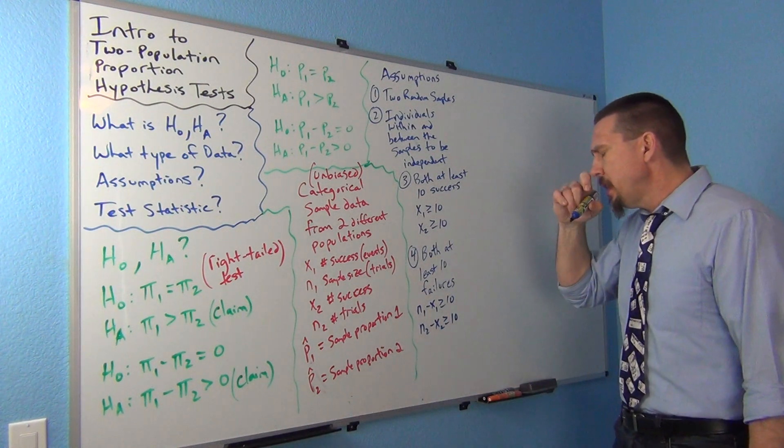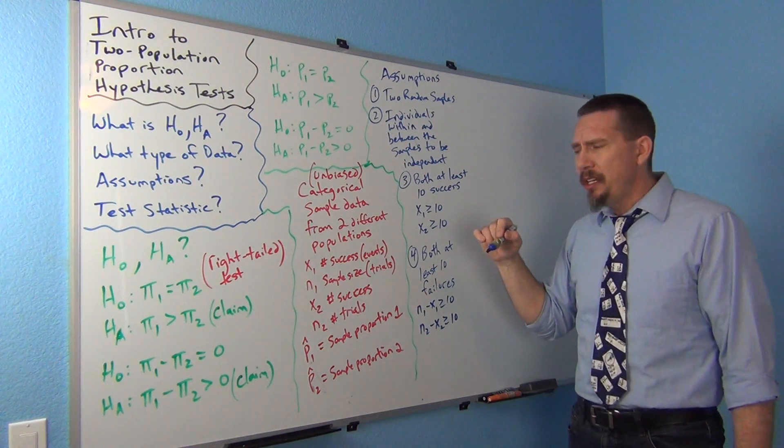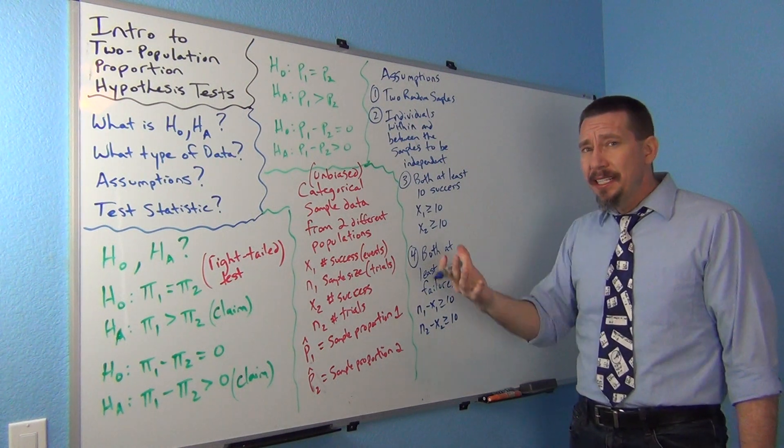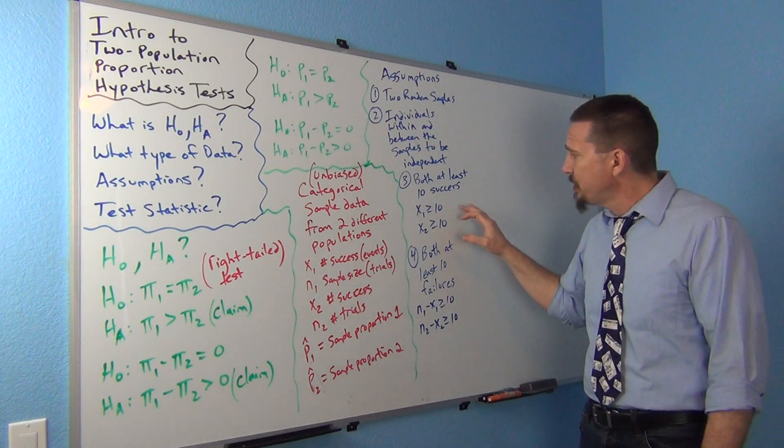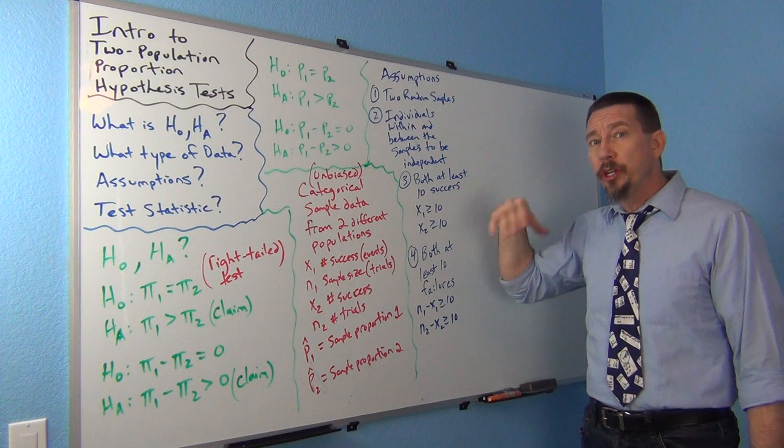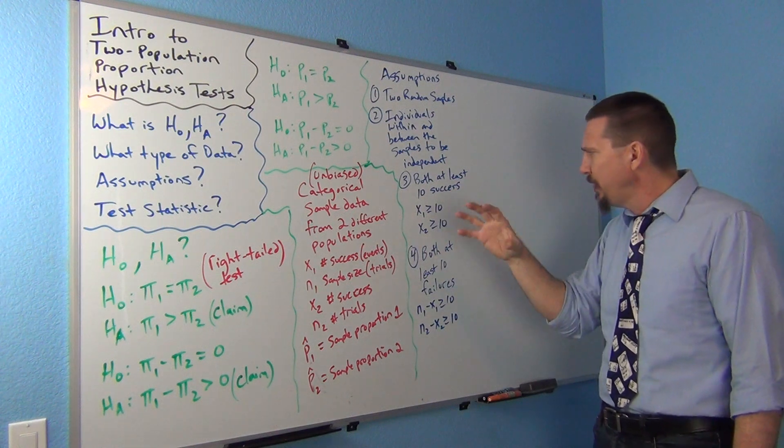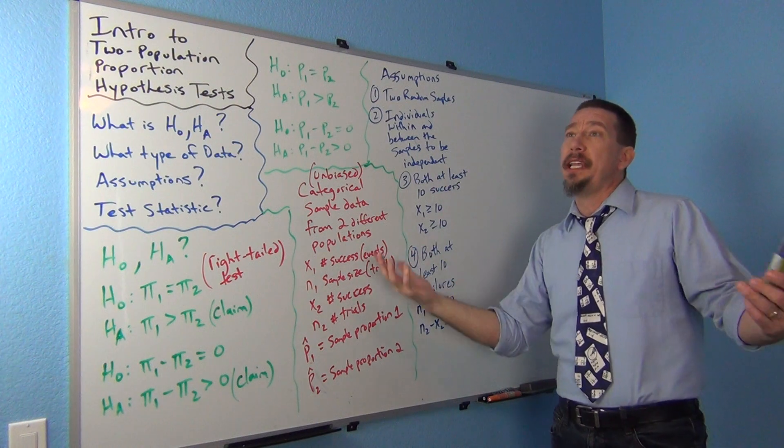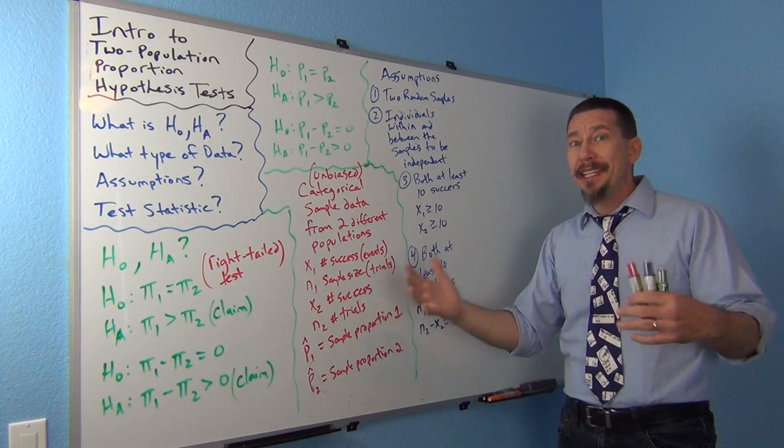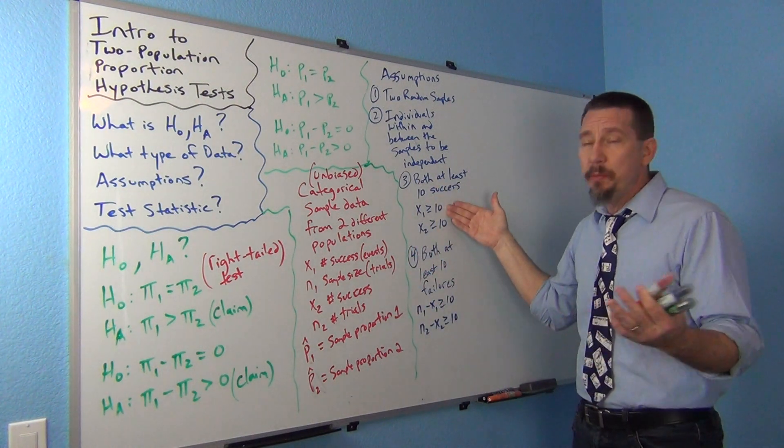So you could also deal with how many do you expect to get? Do you expect to get more than ten? A lot of times, there's another formula that's sometimes used before you collect the data. Like, if you want to try to figure out, am I going to get at least ten if I collect data from 75 people, is that going to be enough for me to get ten people that smoke?